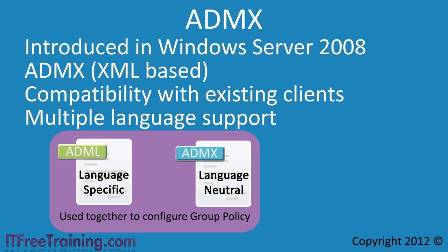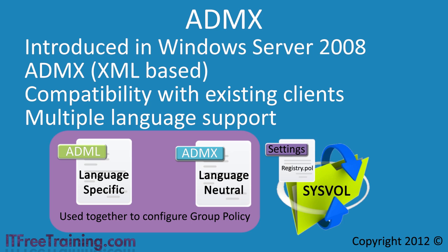Since the ADML file is independent of the ADMX file, it can be changed at any time to allow the administrator to choose the language they want to edit the group policy in. Both of these files can be stored on the local computer or in a central store. In the SysVol folder, only the group policy settings themselves are stored, which are very small compared to the files that define the settings and interface. The ADM files are also stored in the SysVol folder; however, the output from the ADM file is the same setting file generated using the ADMX and ADML files. This is why ADM and ADMX files can be used in the same domain without any issue — both systems output the same setting file that can be read by any group policy client.